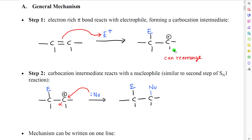Because there is a carbocation intermediate in this reaction, we can see rearrangement. The second step then looks a lot like the second step of an SN1 reaction. We formed a carbocation — that would be our alpha carbon — and the nucleophile is attracted to the positive charge on that carbon and uses a pair of electrons to make a bond, creating this species.